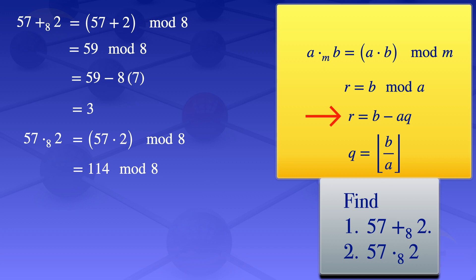To find that remainder, we use the same formula. We need to first find the quotient, b divided by a. Our divisor is 8, so a equals 8. Our dividend is 114, so b equals 114. Using those values, our quotient is the floor value of 114 divided by 8, which gives us 14.